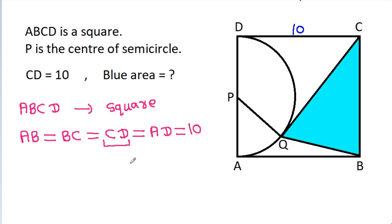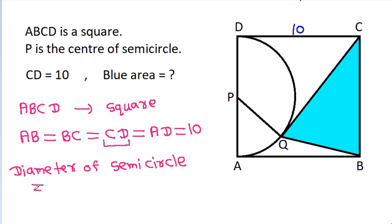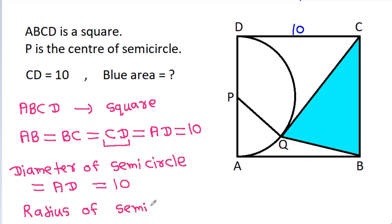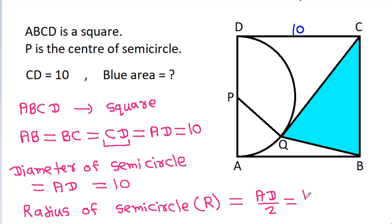So all sides are equal to 10, and the diameter of the semicircle is equal to AD, which is 10. Therefore, the radius of the semicircle — suppose R — equals AD divided by 2, which is 10 divided by 2, giving us 5.